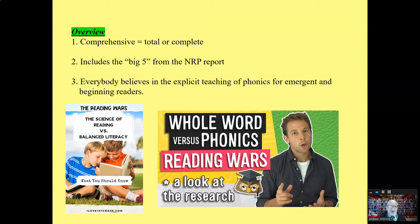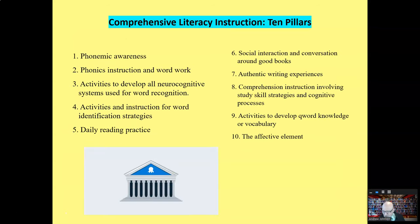An overview: comprehensive means total or complete. A comprehensive approach to reading instruction includes the Big Five from the National Reading Panel report, but the Big Five was five pillars short — consider these the Big Ten. Everyone believes in the explicit teaching of phonics for emergent and beginning readers. It's not the 'what' — it's the 'how' and 'how much.' The reading wars — well, there really wasn't a reading war, it was more like a coup. Here are the ten pillars.